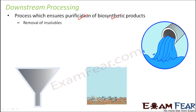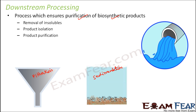Removal of insolubles can be done by filtration or sedimentation - in sedimentation, heavier particles settle down and the good product remains on top for separation. Product isolation involves removing solvents like water so only the product is taken out. Product purification separates particles that may closely resemble the final product - for example, unwanted particles that resemble enzymes in structure also need to be removed.